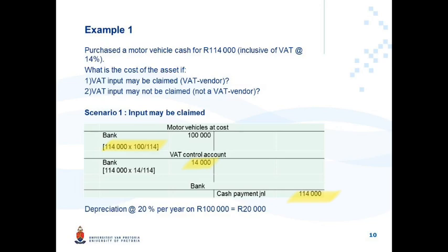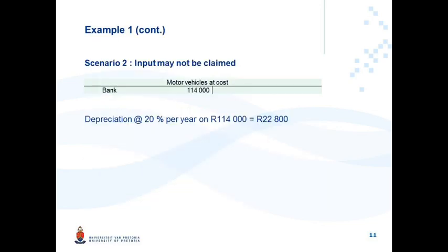Depreciation on the asset under scenario one will be calculated at 20% on cost of R100,000. Under scenario two, where you are not a VAT vendor and cannot claim input tax, the cost price of the asset is the full R114,000, and the 20% depreciation will be based on the full R114,000.